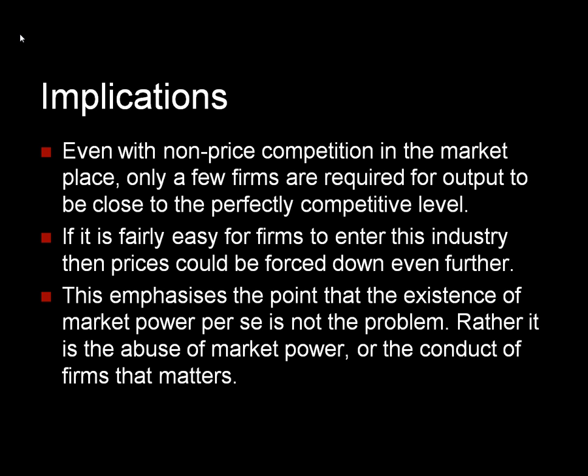There are important implications of the Cournot model. Because even with non-price competition in the marketplace, only a few firms are required for output to be close to the perfectly competitive level — though they can't actually reach it; even with 100 firms you're still a little bit away. Five firms competing under Cournot assumptions would bring about 84% of the output levels available under perfect competition, and that's just actual competition. If it's fairly easy for firms to enter the industry, prices could be forced down even further. So we're emphasising that the existence of market power per se is not the problem — it doesn't take too many firms to reduce welfare losses. Rather, it's the abuse of market power or the conduct of firms that matters in the marketplace.